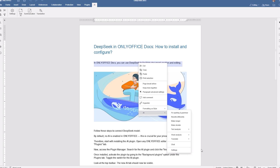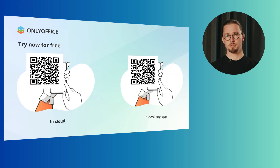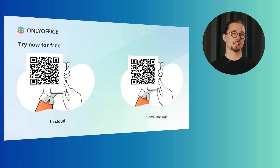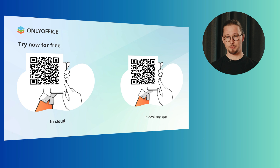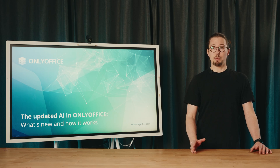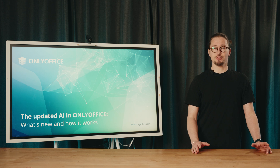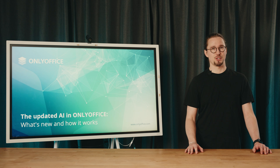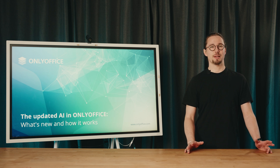All the AI features are available for users in both cloud and desktop. You can create a free DocSpace account if you don't have it yet, as well as download free desktop apps for Windows, Linux and macOS — just scan the QR codes on the slide. Thanks everyone for being with us. We hope you enjoyed the webinar. Try the updated AI functionality in OnlyOffice and share your impressions on social media channels. Your feedback is, as always, much appreciated. Thank you, have a good day, bye-bye.